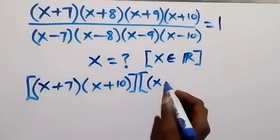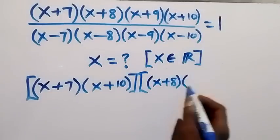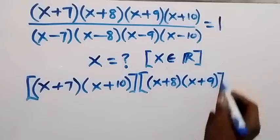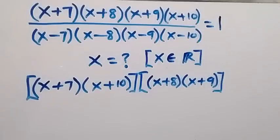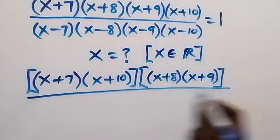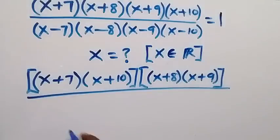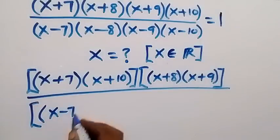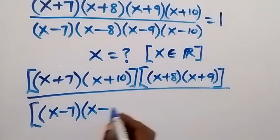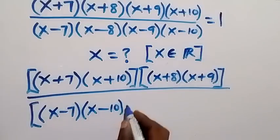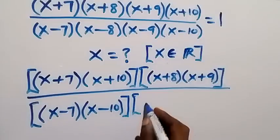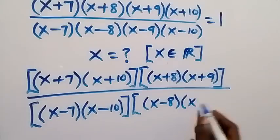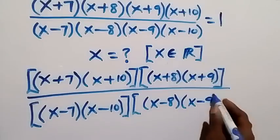We group these together and also group the remaining terms together: we have x plus 8 multiplied by x plus 9. Then in the denominator we group x minus 7 and x minus 10 together, so we have x minus 7 multiplied by x minus 10.